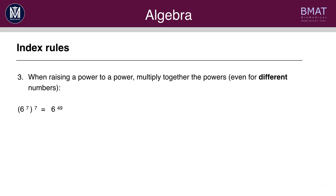Rule 3: when raising a power to a power you can multiply together the powers, even for different numbers. So 6 to the power of 7, all to the power of 7, is equal to 6 to the power of 49. This would even work if the powers were different — so if it was 6 to the power of 4, all to the power of 5, you'd get 6 to the power of 4 times 5, which is 6 to the power of 20.